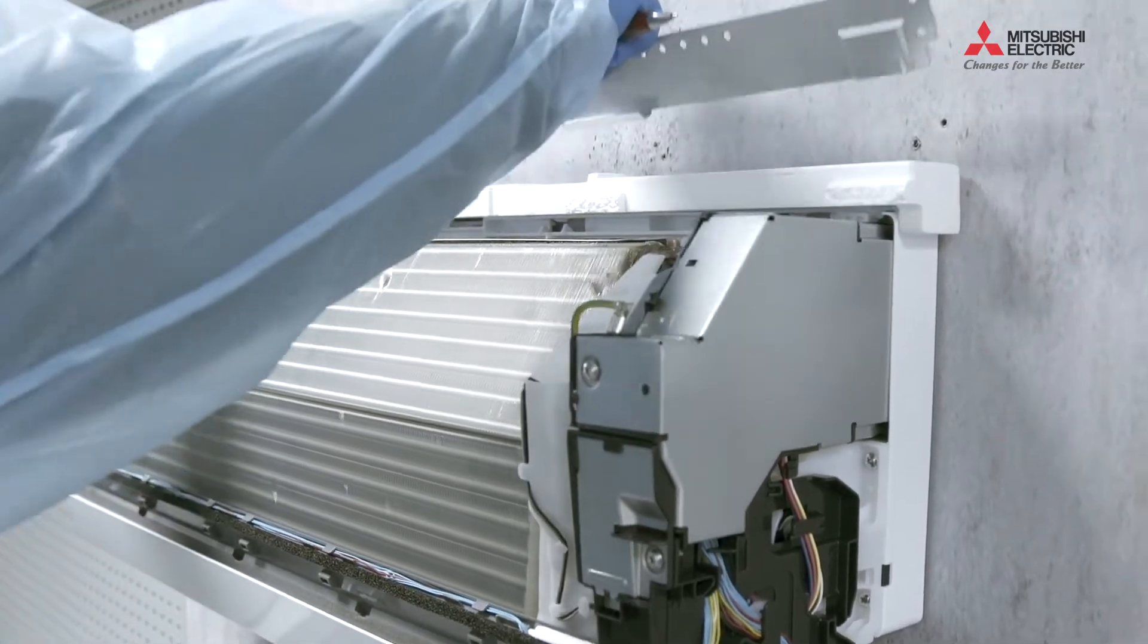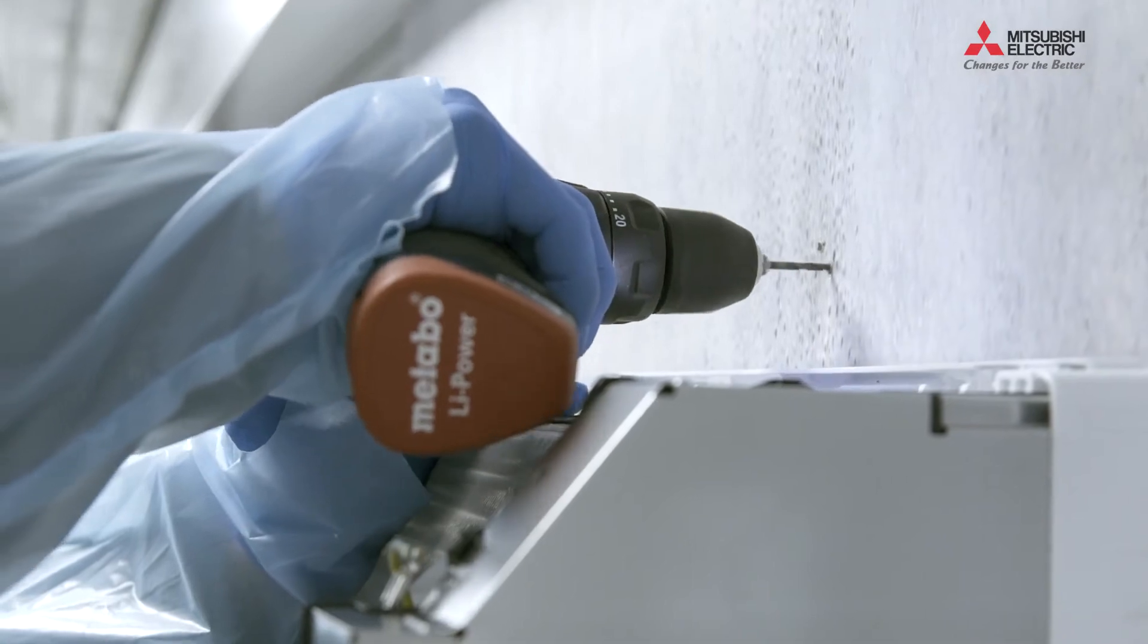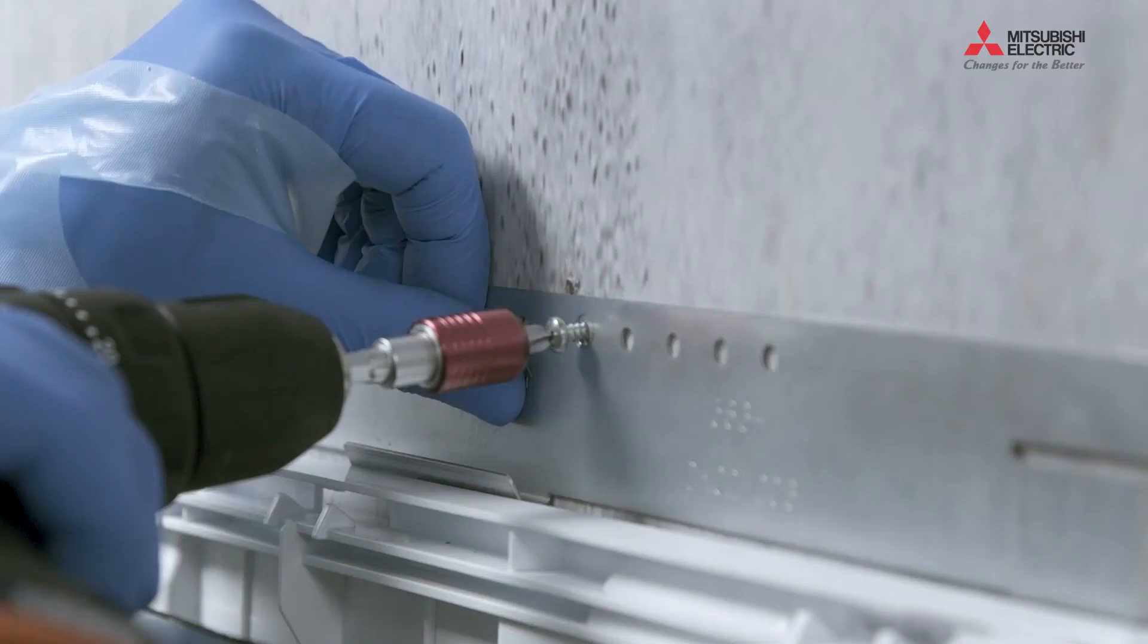Next, place the template according to the indoor unit's configuration above the machine. Fix the backplate to the wall.